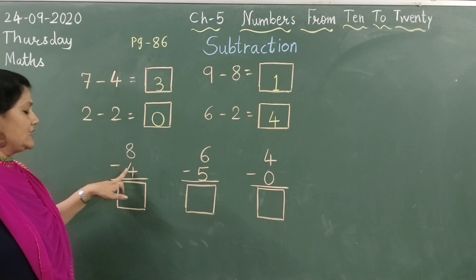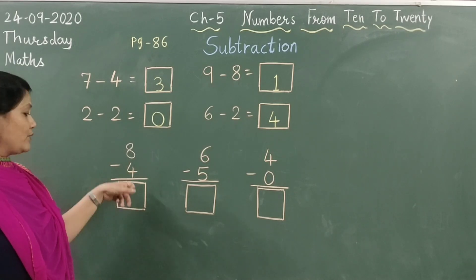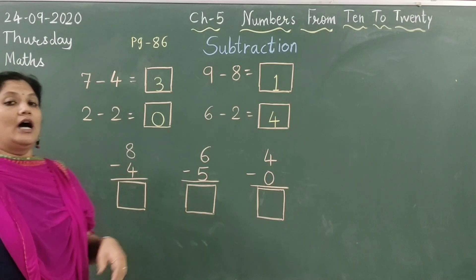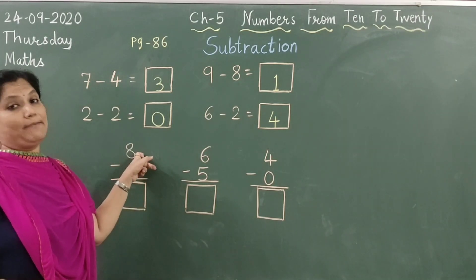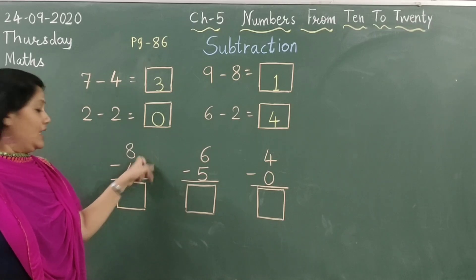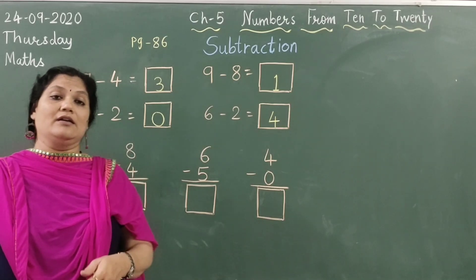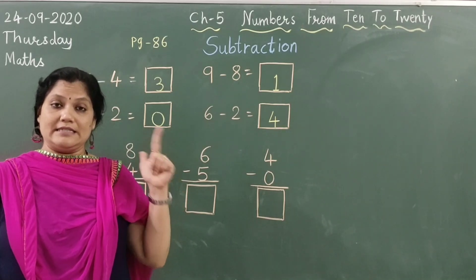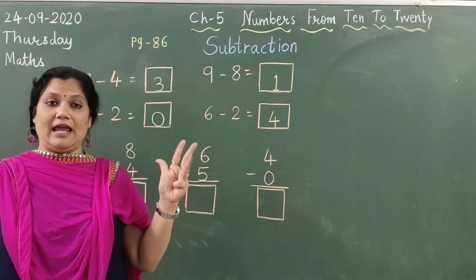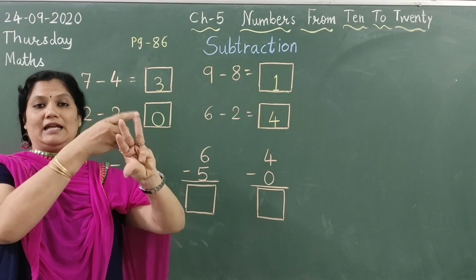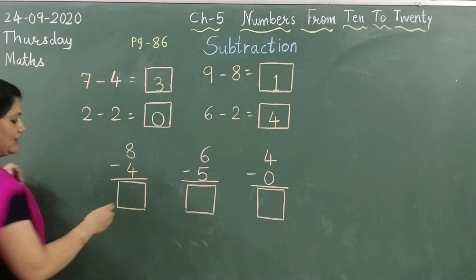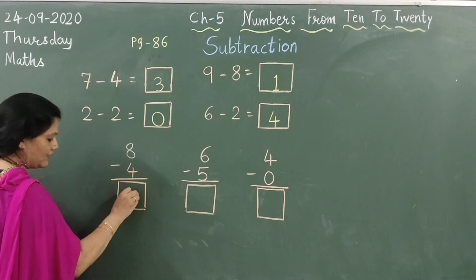8 minus 4. So what we will do? After 4 we have to count till 8 number comes. So what will come after 4? 5, 6, 7 and 8. So how many figures are there? 1, 2, 3 and 4. So it will remain 4.